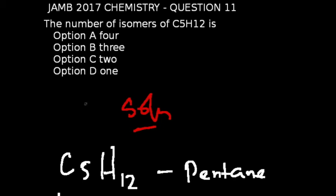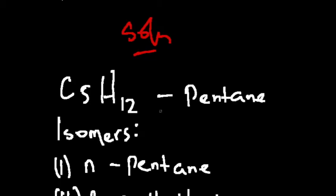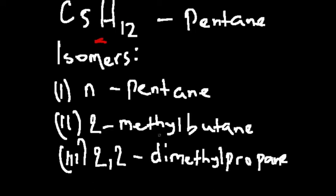JAMB 2017 chemistry question number 11 asks about the number of isomers of C5H12. C5H12 is simply pentane, which is a member of the alkane family. Let's quickly look at what isomers are - these are compounds having the same molecular formula but different structural formulas.